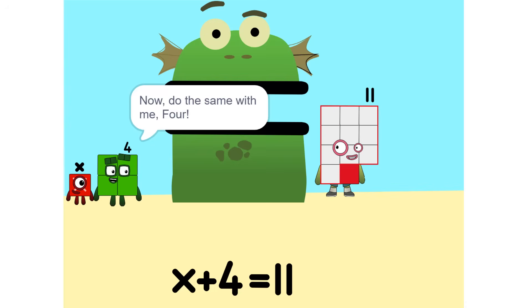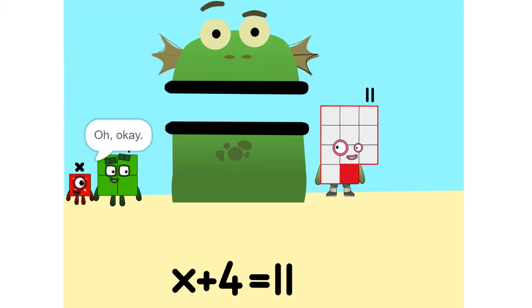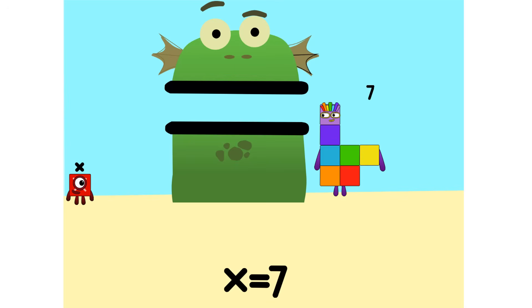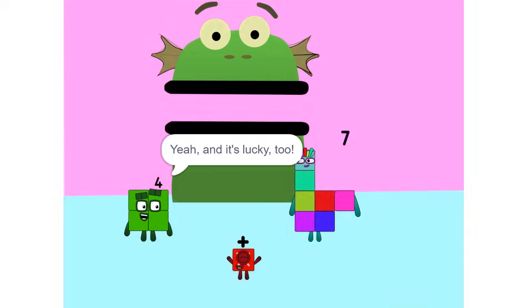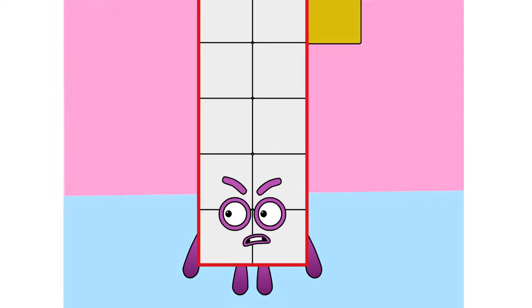Now do the same with 4. Okay. 11 minus 4 is 7. So now what do I do? What's there left to do? Oh. X equals 7, so I'm 7. Yeah. And it's lucky too.